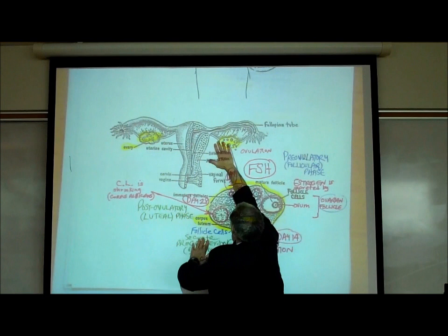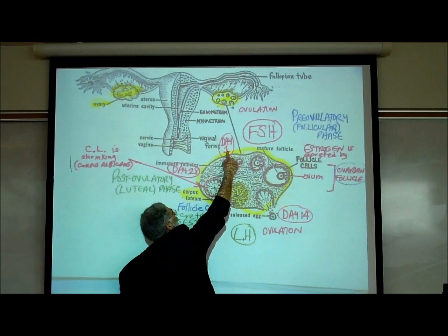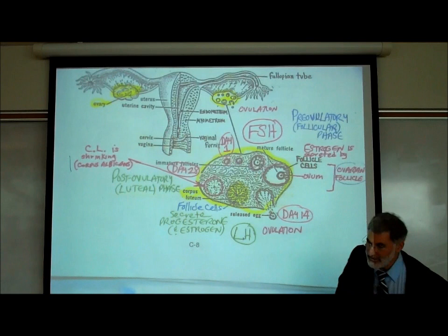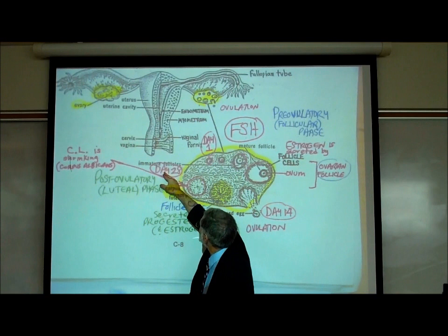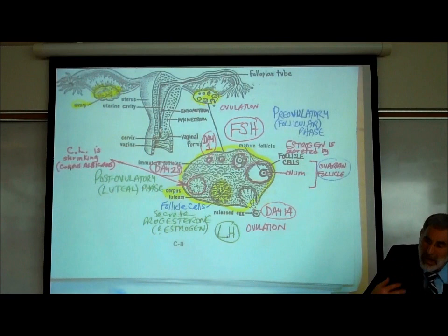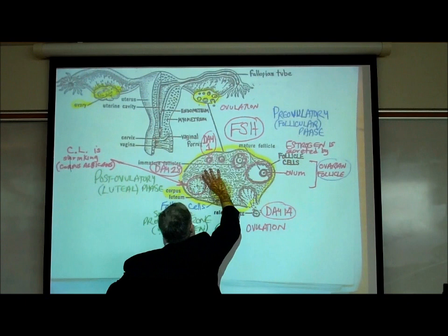Here is a cutaway and enlarged view of the ovary. Day one is marked at the start, day 14 is where it shows the egg being released, and day 28 is marked near the immature follicles. There is a monthly menstrual cycle in women that lasts about 28 days — about one month, about four weeks, normally.